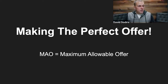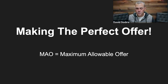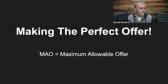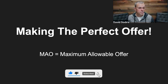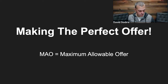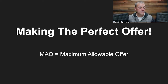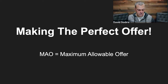Making the perfect offer. In order to make the perfect offer, we are essentially going to be using what's referred to as the MAO formula. The MAO formula stands for the maximum allowable offer that we are going to be able to make when we're talking to a seller.